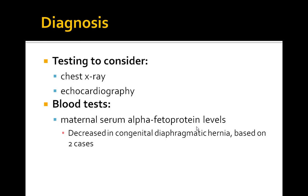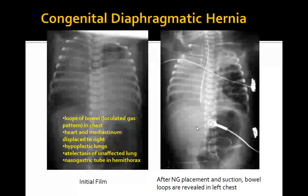For diagnosis, you want to get a chest x-ray as soon as possible. Also possibly consider getting an echo, but chest x-ray is the first line. For blood tests, you want to look at serum alpha-fetoprotein levels, as some studies have shown that these levels are decreased in patients with congenital diaphragmatic hernia.